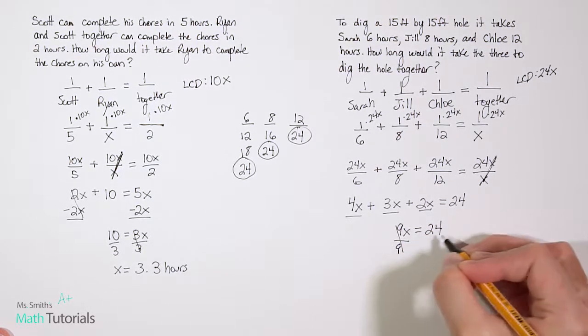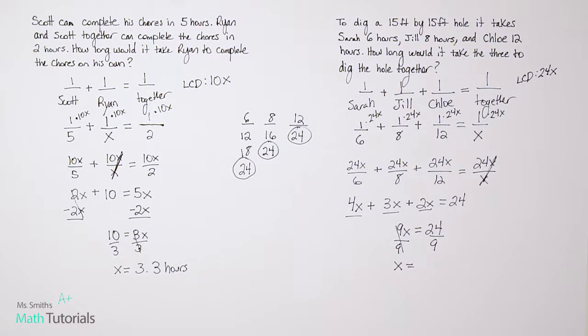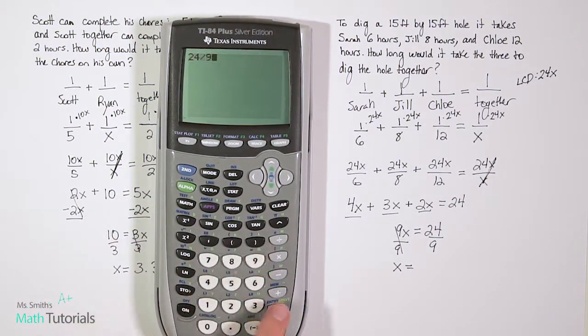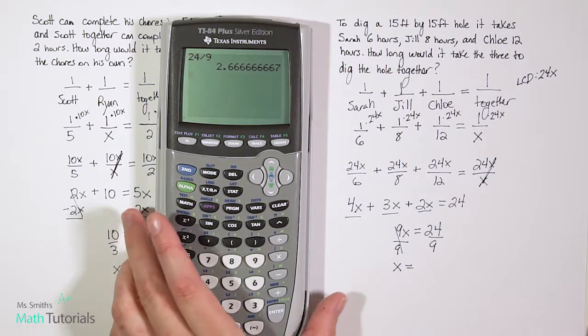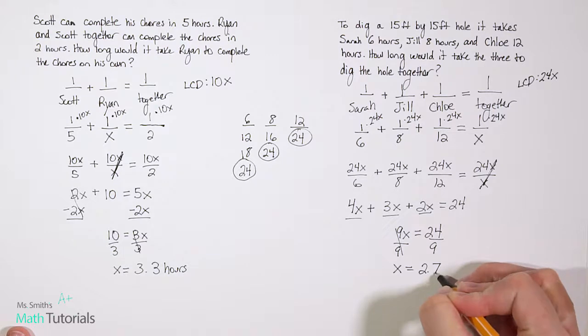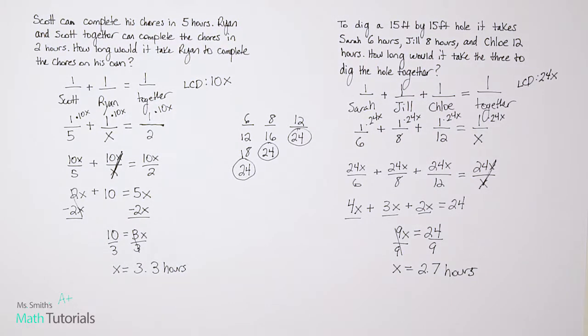We'd want to divide by 9 on both sides and we get x equals, now 24 divided by 9, that definitely is going to give us a decimal. Let's see what that would be: 2.6 repeating. So let's say that would be 2.7 approximately. So x would be 2.7. We're talking about hours, right? So keep in mind what our answer is. So we're saying that if Sarah, Jill, and Chloe worked together, it would take them 2.7 hours to dig this hole.